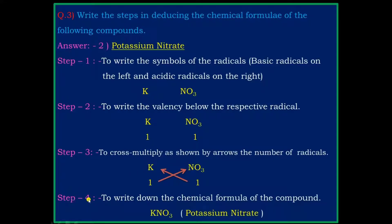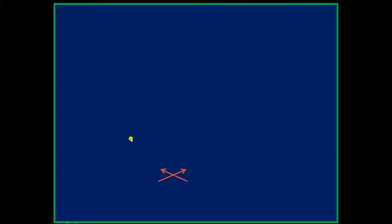Step 4: write down the chemical formula of the compound. After cross multiplying, the formula for potassium nitrate is KNO₃.